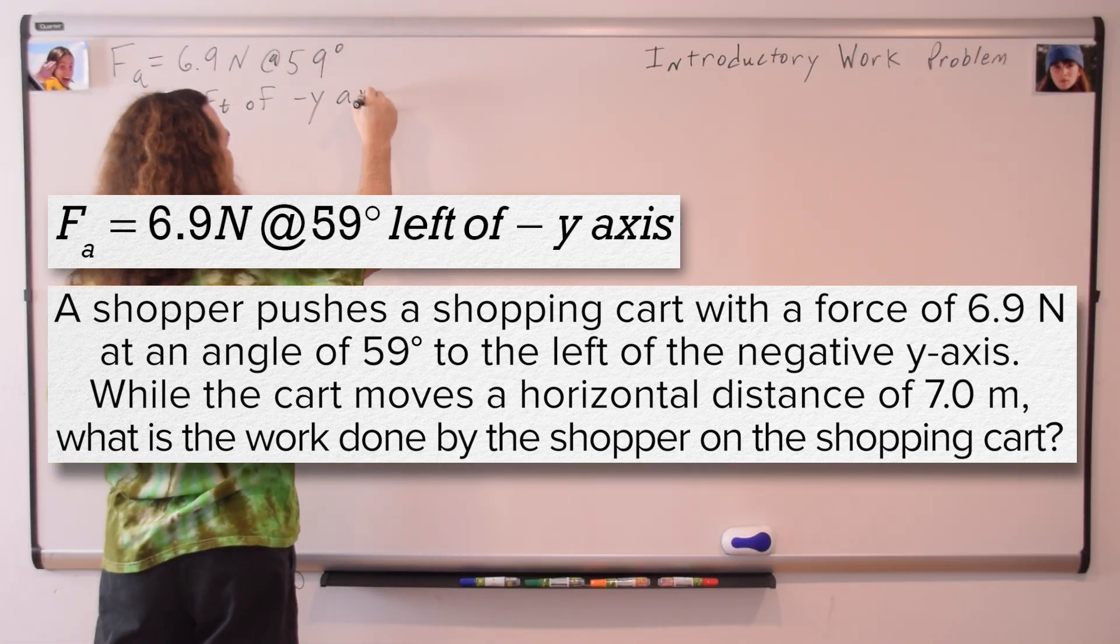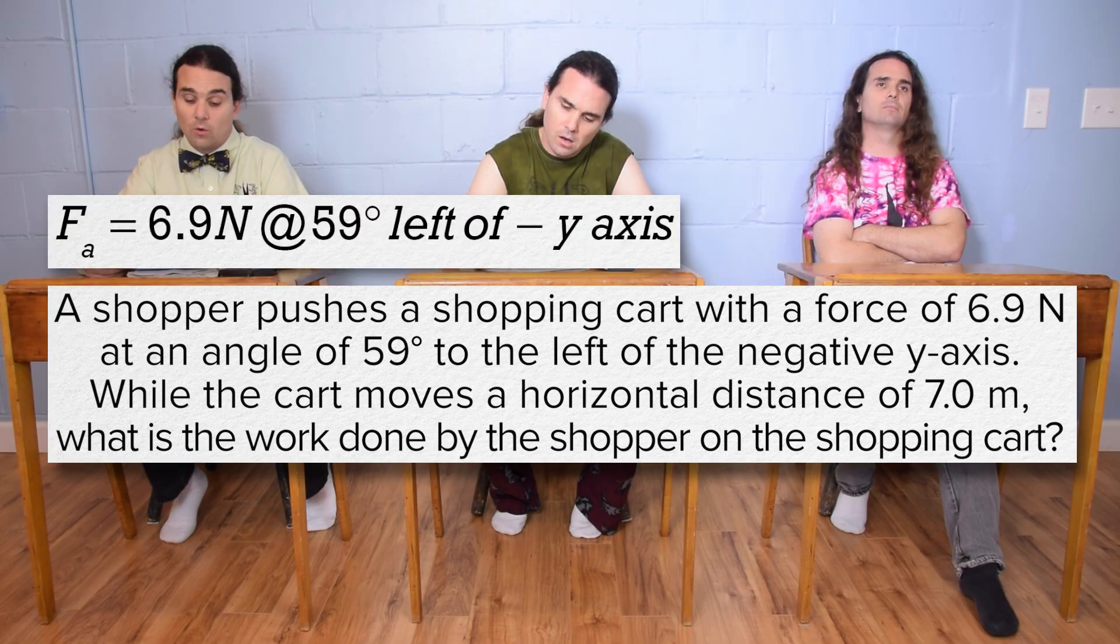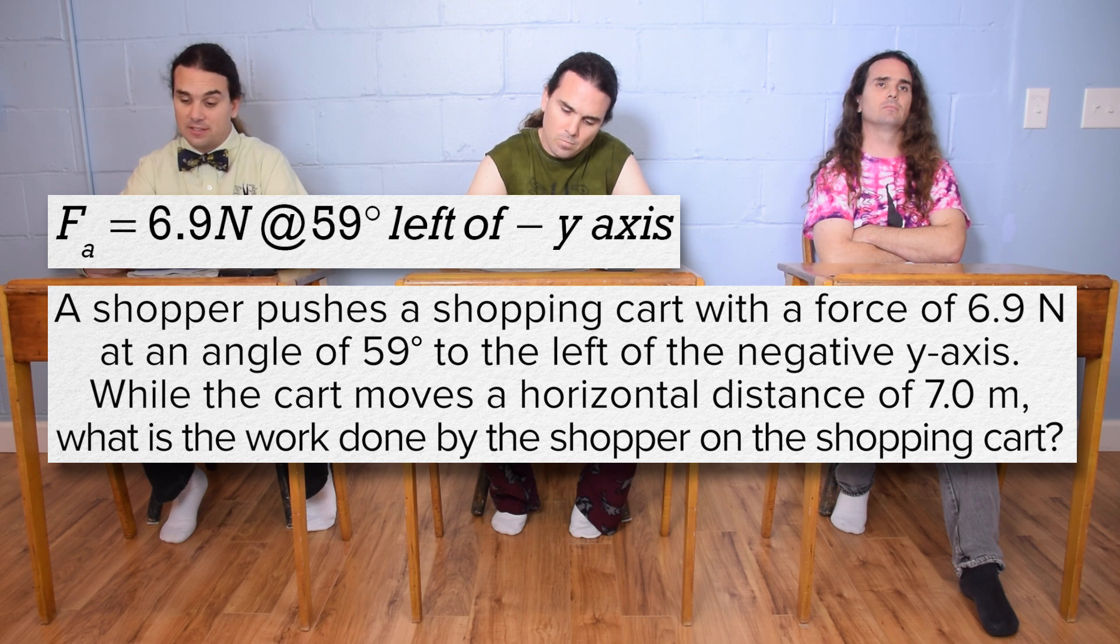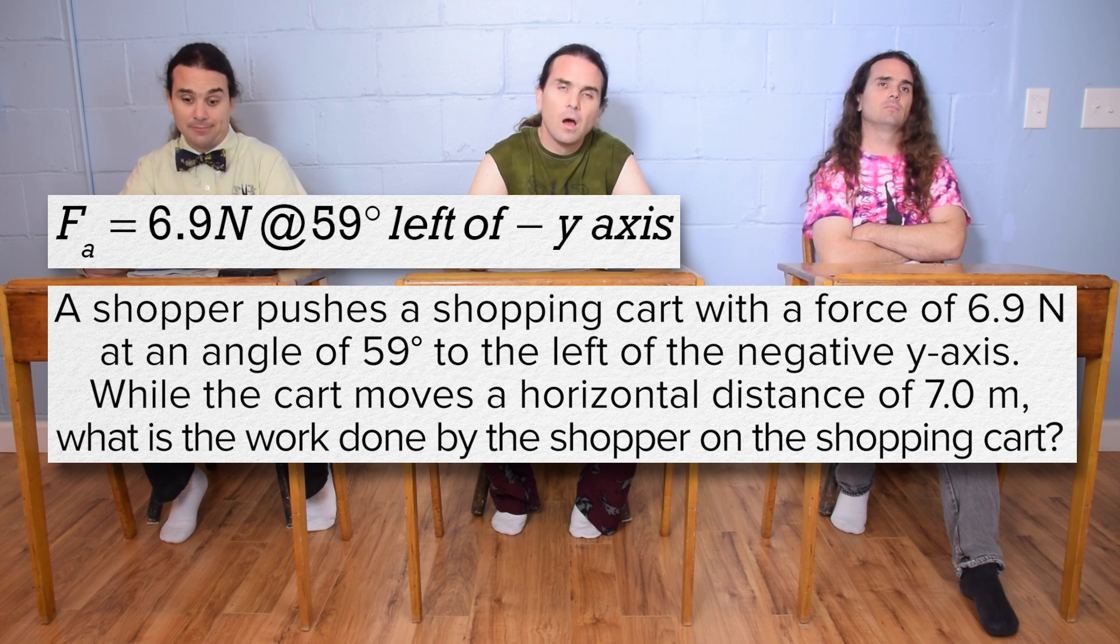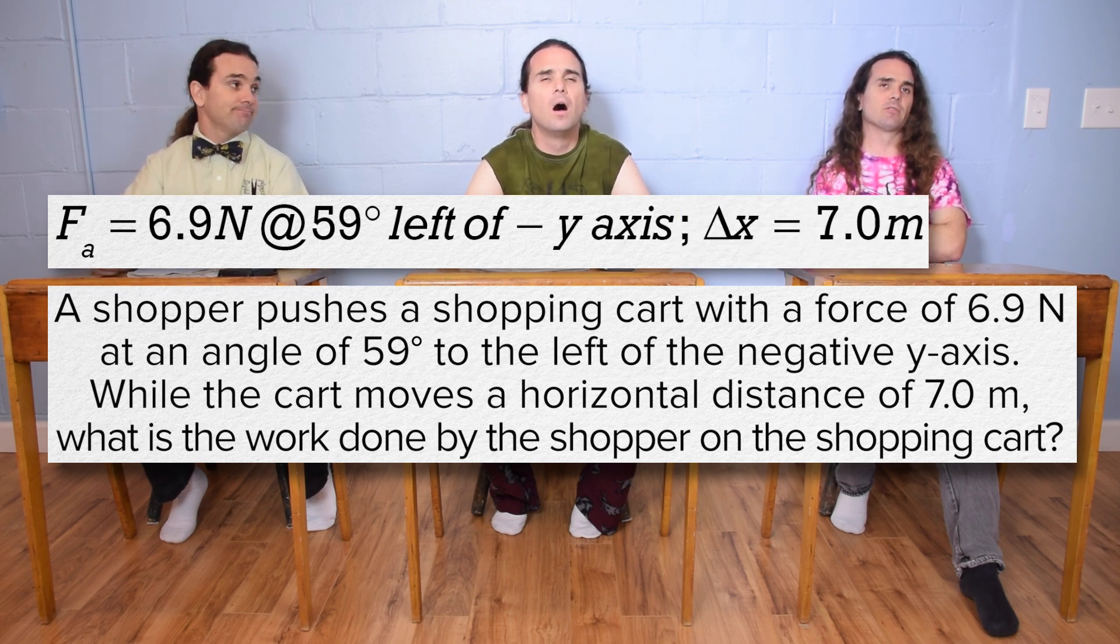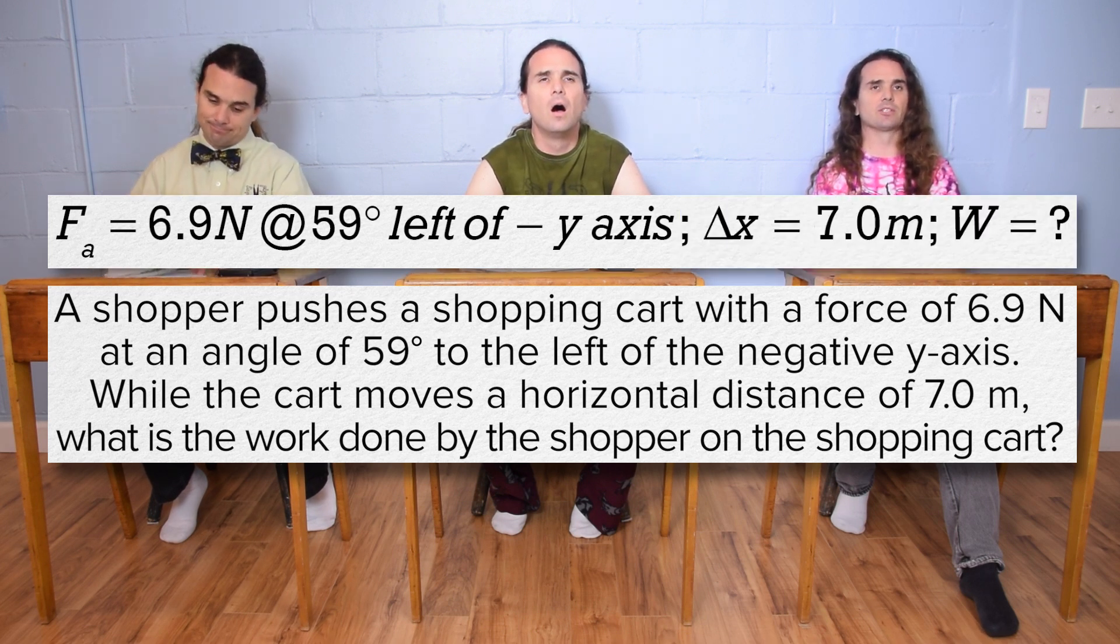Mr. P: Billy, please continue. While the cart moves a horizontal distance of 7.0 meters, what is the work done by the shopper on the shopping cart? Mr. P: Displacement equals 7.0 meters and work equals question mark.